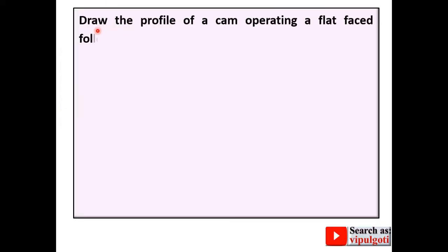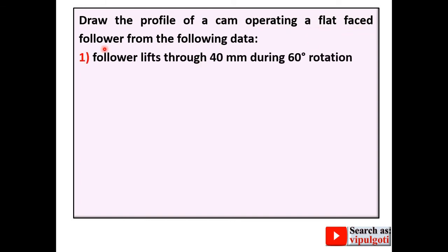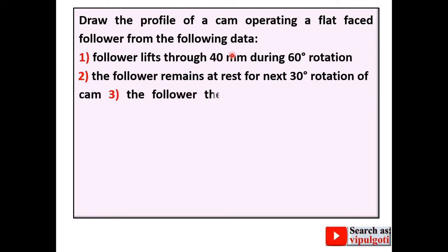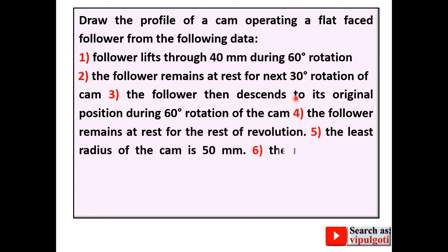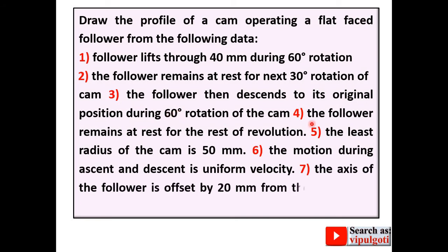Let's see the description. Draw the profile of a cam operating a flat face follower from the following data. Follower lifts through 40 mm during 60 degree rotation. The follower remains at rest for next 30 degree rotation of cam, then descends to its original position during 60 degree rotation. The follower remains at rest for the rest of revolution. The least radius of the cam is 50 mm, so that is the radius of the base circle.